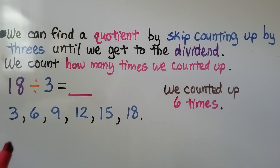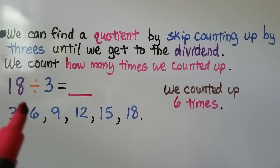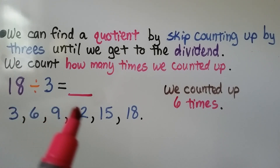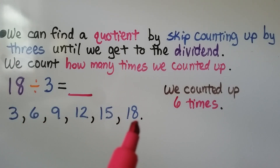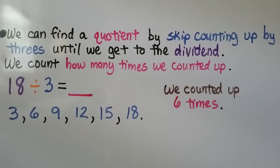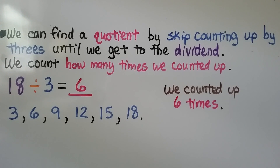We count how many times we skip counted. We did 1, 2, 3, 4, 5, 6 times. We know 18 divided by 3 is equal to 6. We can actually do this to find any quotient.